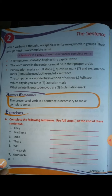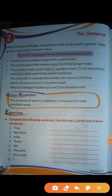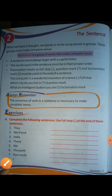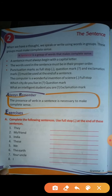Now I will give you Exercise A of page number 12. Students, you all have to write all of Exercise A in your book. If you don't have a book, you can do it in your copy. The question is: complete the following sentences using a full stop at the end. All the sentences you make must end with a full stop — there will be no question mark, only a full stop.